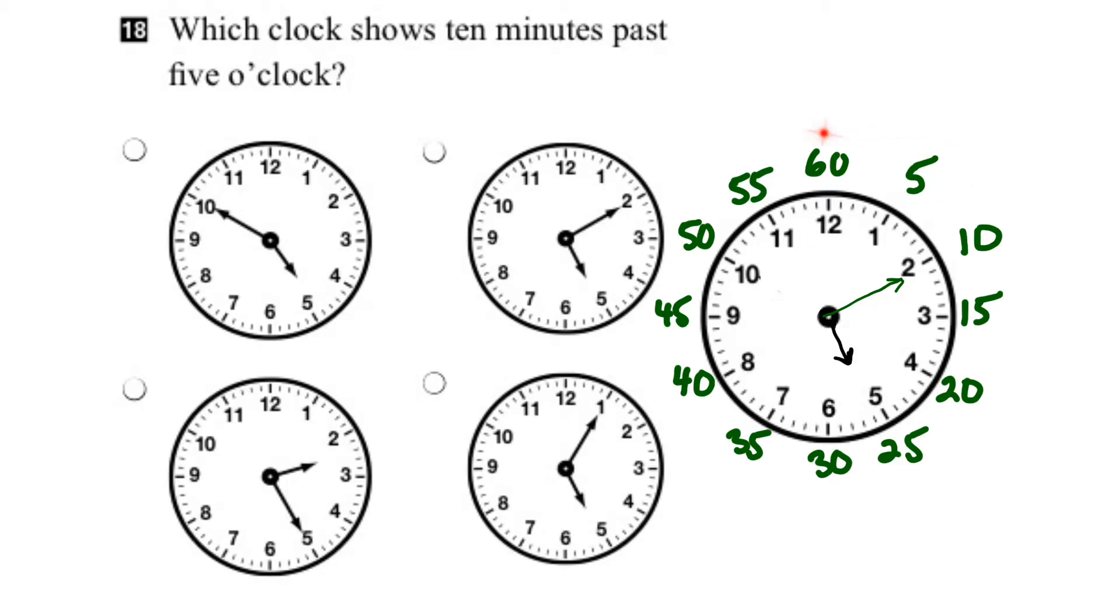So there we go. This example here represents 10 minutes, the minute hand, past 5, the hour hand. And if we take a look at our options that were given, we can see that it's the second option here, this one right here, that matches our clock. And so this represents 10 minutes past 5.